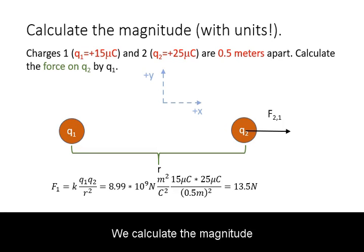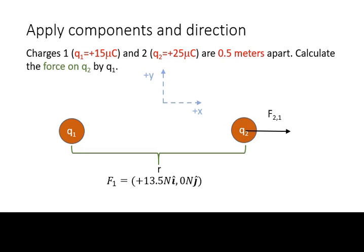We calculate the magnitude of the Coulomb's force on the charge. We then calculate the components of this force along the coordinate axes. In this case, the calculation is simple, because force 1 only has a component in the positive x-direction.